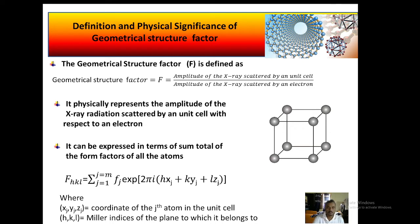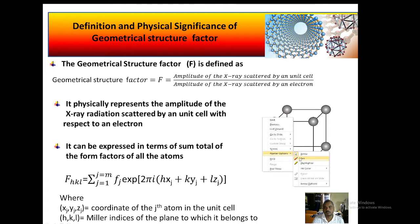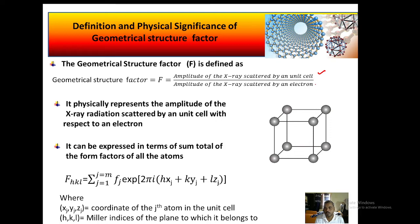First, we will define it. The geometrical structure factor is defined as the ratio of the amplitude of X-ray scattered by a unit cell to the amplitude of X-ray scattered by an electron. If you correlate this with the definition of the atomic form factor, there the ratio was amplitude scattered from an individual atom to an individual electron. But here it is the ratio of amplitude of X-ray radiation scattered by a unit cell to the electron.